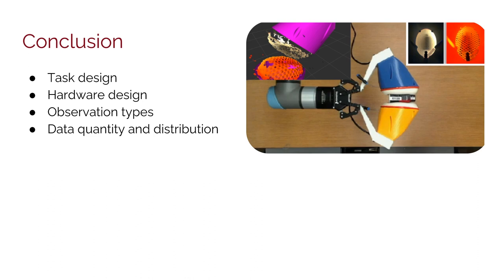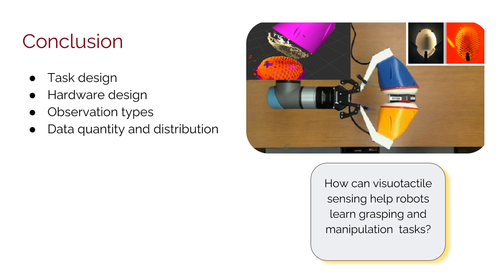Over the course of this project we have explored how task design, hardware design and visio-tactile sensors, observation types, data quantity, and data distribution all impact performance for learning robotic tasks through Diffusion Policy. This exploration has led us closer to addressing the question of how can visio-tactile sensing help robots learn grasping and manipulation tasks.